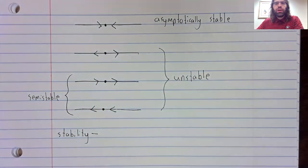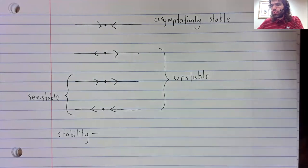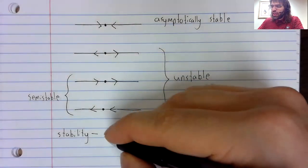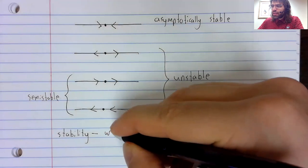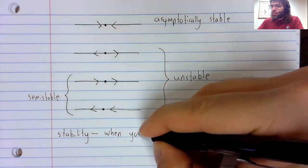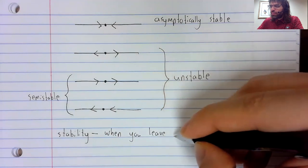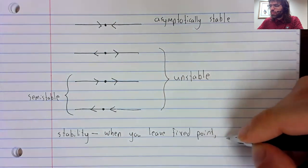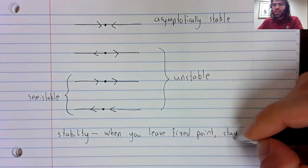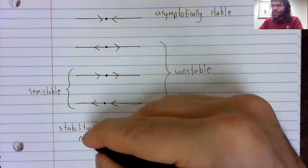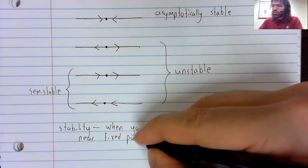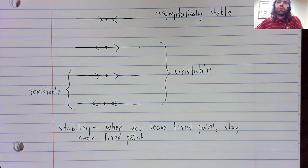If a fixed point is just stable, if we don't have this word asymptotically automatically in front of it, that means that when you leave the fixed point, you stay near the fixed point, but you don't necessarily return to it.